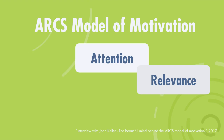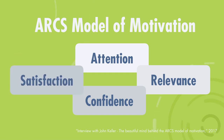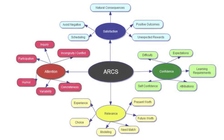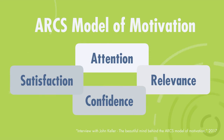Next is relevance — how is the content relevant to the learner? The third is confidence — how does the learner have high or low confidence with the subject matter, and do they fear failure? And the last is satisfaction — do the learners feel good about their accomplishments? What's great about this model is that it gives a lot of practical strategies to achieve motivation in those four areas. Keller emphasizes that front-end analysis is key to uncovering motivational problems that need to be solved.